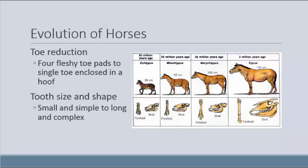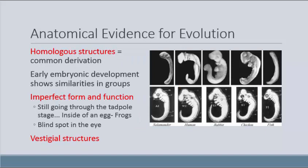Moving on from fossil evidence to anatomical evidence of evolution — one of the really fun topics. We can look at homologous structures, which lend themselves to understanding common derivation. When you look at early embryonic development, you can see incredible similarities among many groups. In this picture you can see salamander, human, rabbit, chicken, and fish. The human, rabbit, and chicken are all amniotes, and you can see just how similar they are at different stages of embryological development.